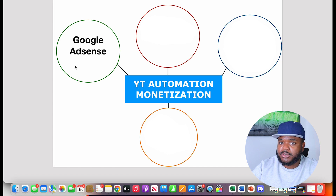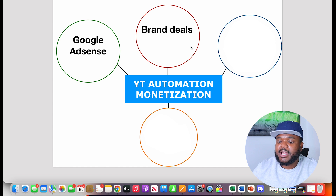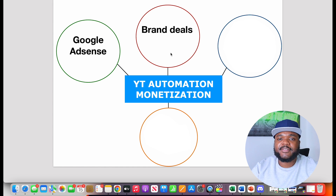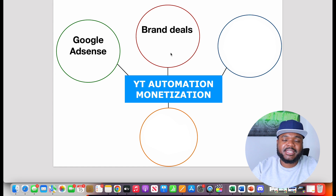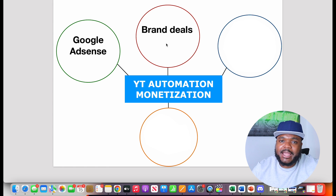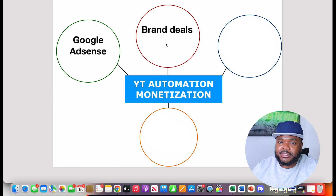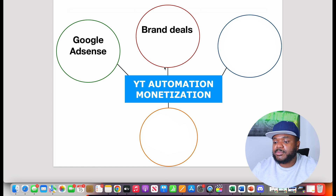Google AdSense is definitely a decent way to start earning money from your channel as long as you meet those requirements and have a decent amount of views. But there are other ways to monetize your channel — for example, by doing brand deals. Once you start building up engagement and viewers on your channel, and it doesn't even need to be hundreds of thousands of subscribers — it could be even 5,000 or 10,000 subscribers — you're going to be eligible to start getting brand deals. I got one of my first brand deals when I probably had around 2,000 to 3,000 subscribers, and it was a decent amount of money.